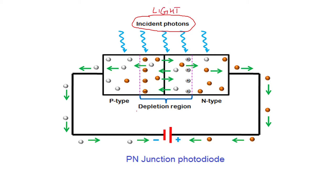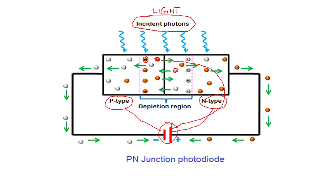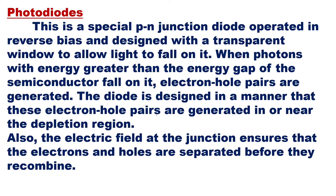The generated electron-hole pairs increase the minority flow of carriers. As more light falls on the device, more photons are incident, more covalent bonds break, and many electron-hole pairs are generated. The current flowing through the device keeps increasing. This means light energy falling on the device is converted into electrical energy — that is the basic concept of the photodiode. Photons are incident as light energy, and the p-n junction is connected in reverse bias.